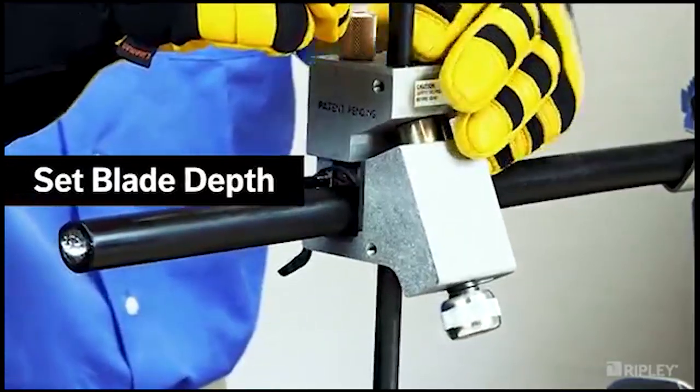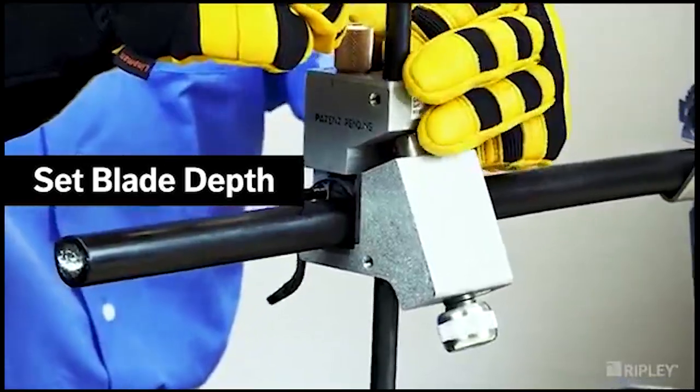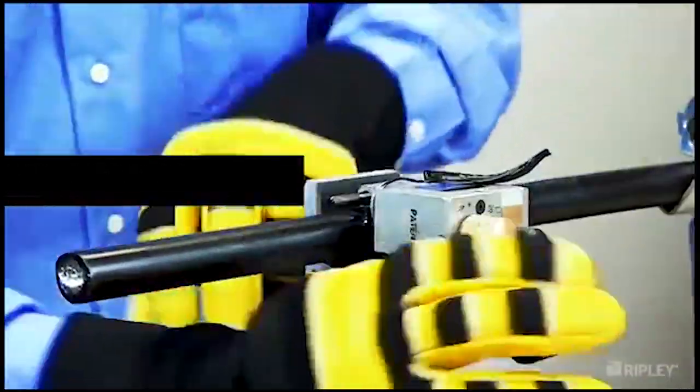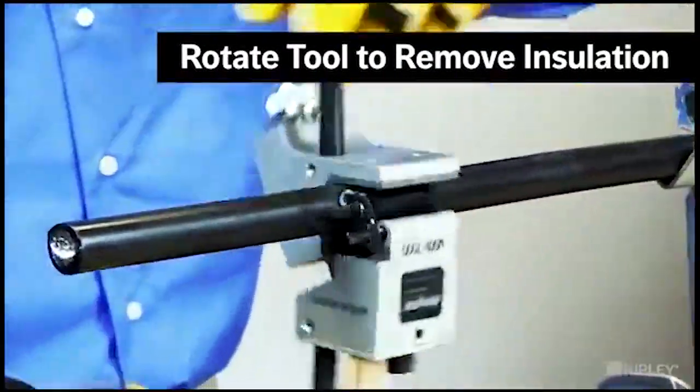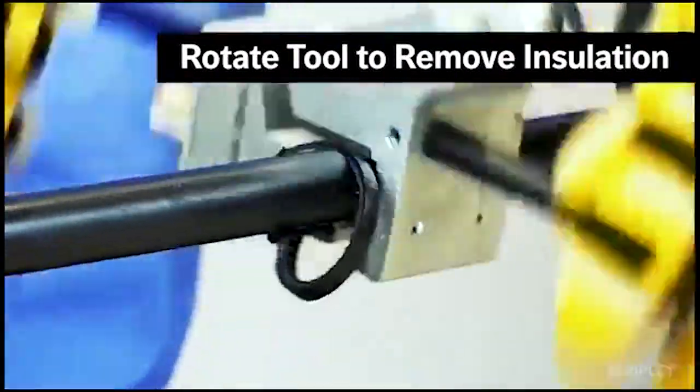Adjust the blade angle to 0 degrees for a squared edge and slowly adjust the blade depth down to the conductor. Rotate the tool to remove a channel of insulation to expose the conductor.